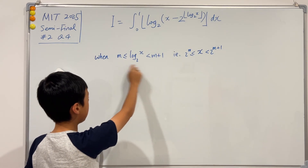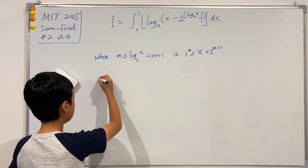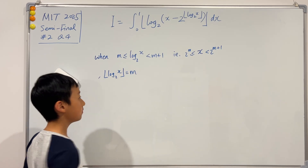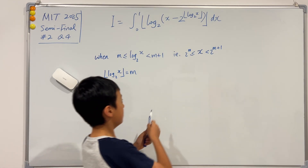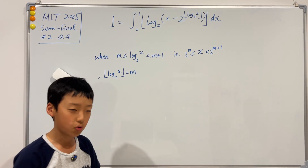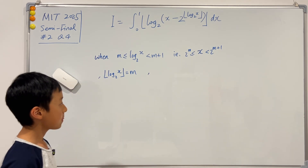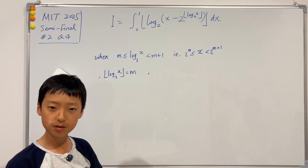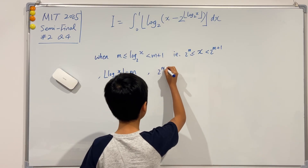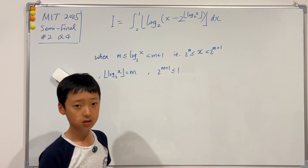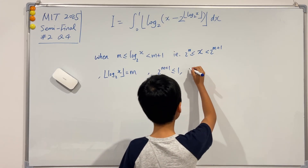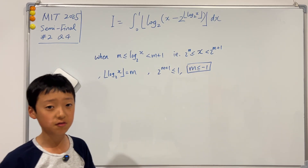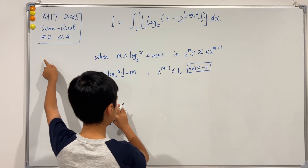So the floor of the log is m. From here we get a very important piece of information: since 2^(m+1) is the upper bound and in the integral 1 is the upper bound, we must have 2^(m+1) less than or equal to 1. From this we can see that m is less than or equal to negative 1, and I'll write that on the side.